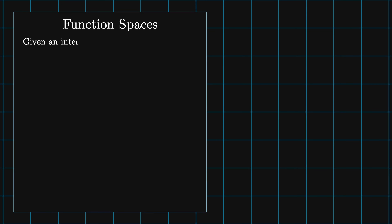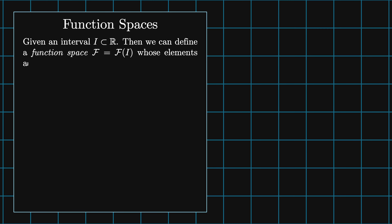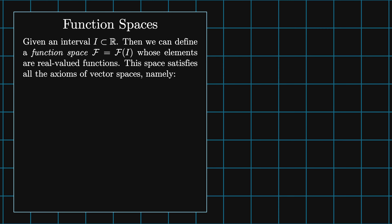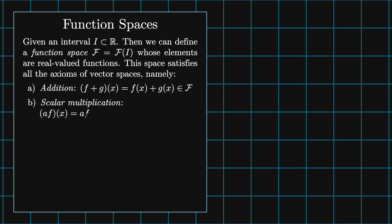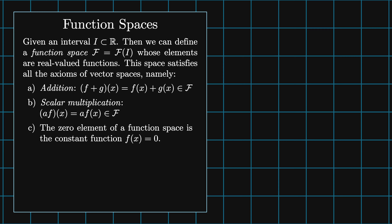Imagine there is an interval i. Then we can define a function space, which is a function of i, whose elements are real valued functions. This space satisfies all of the axioms of vector spaces: namely addition f plus g of x equals f of x plus g of x, which is itself an element of f; scalar multiplication, af of x equals a times f of x, which is also an element of f. The zero element of a function space is the constant function with value zero everywhere on the interval.